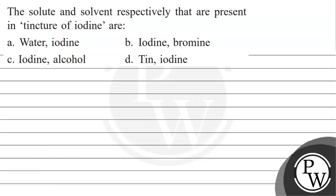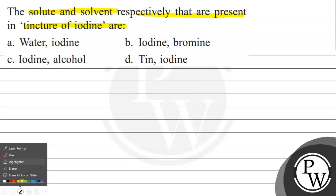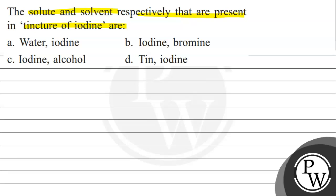Hello Bacho, let's read this question. The question says the solute and solvent respectively that are present in tincture of iodine are: option A, water and iodine; option B, iodine and bromine; option C, iodine and alcohol; option D, tin and iodine.